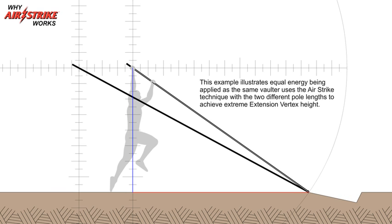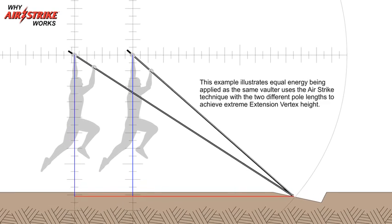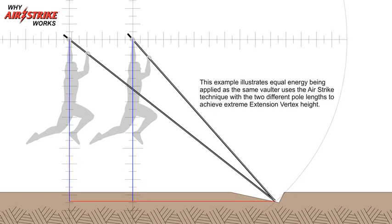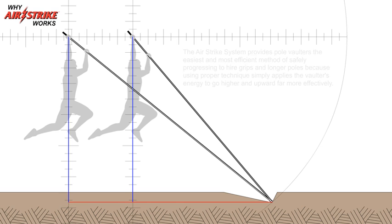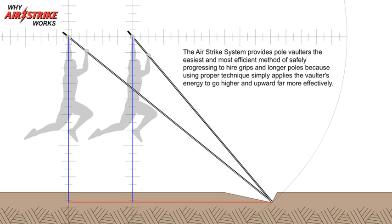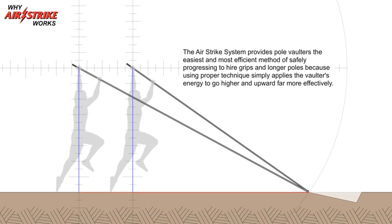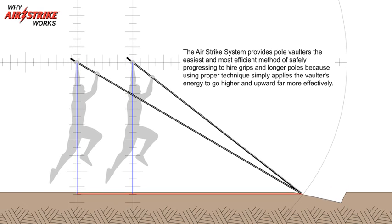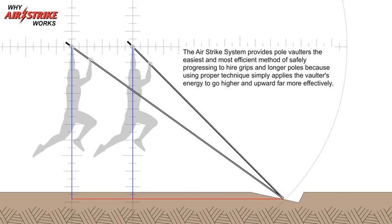This example illustrates equal energy being applied as the same vaulter uses the airstrike technique with the two different pole lengths to achieve extreme extension vertex height. The airstrike system provides pole vaulters the easiest and most efficient method of safely progressing to higher grips and longer poles because using proper technique simply applies the vaulter's energy to go higher and upward far more effectively.